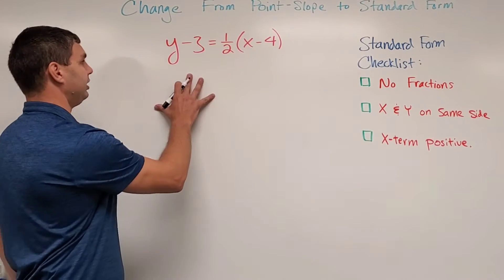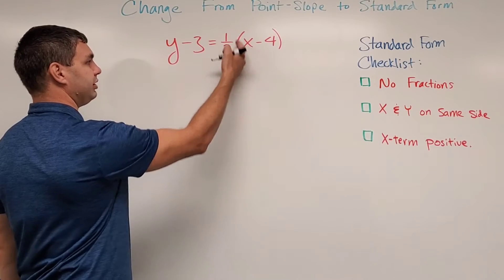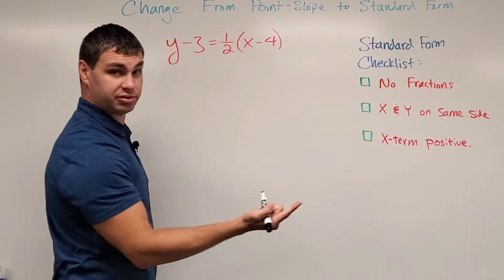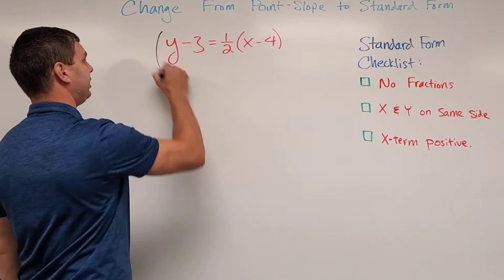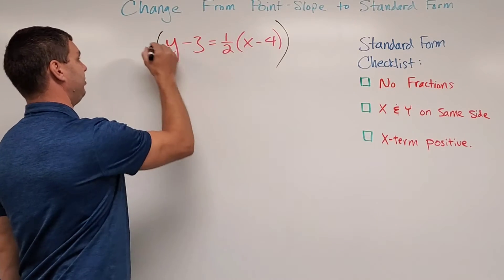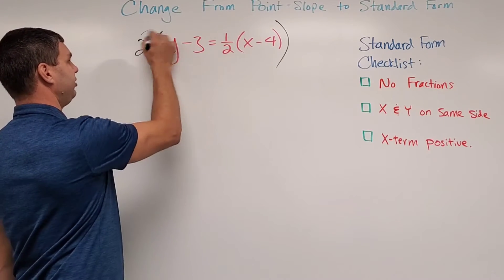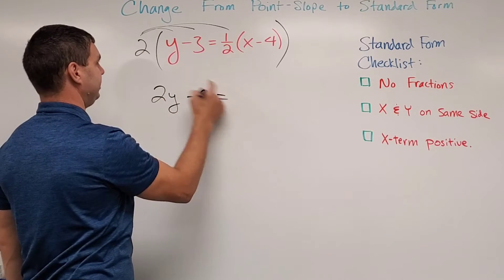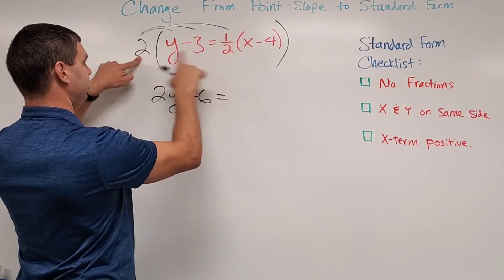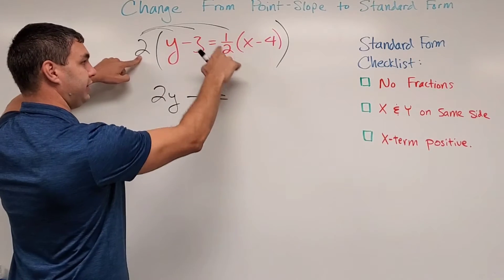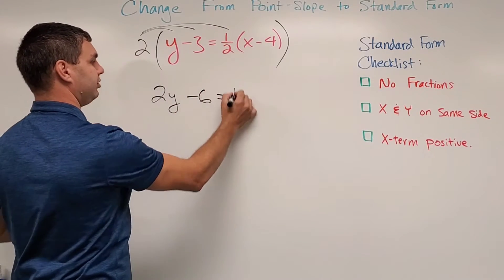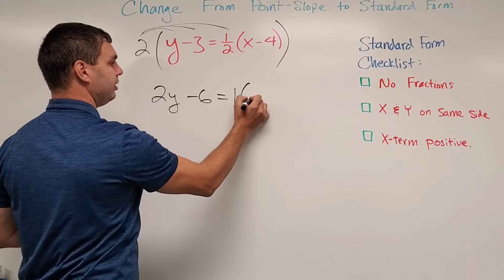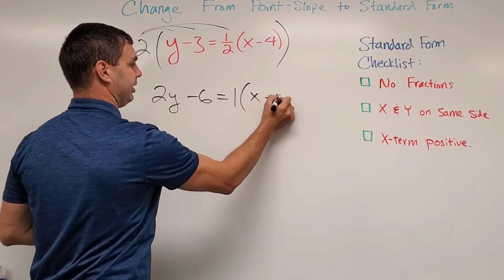Let's try it. In this one I'm probably first going to get rid of my fraction. That's my first step in my checklist by multiplying by the denominator. Multiplying by 2 here, when I do that, let's see what I get. I get 2y minus 6 equals, and then the reason I chose 2 is because the 2 for multiplying and dividing by 2 is going to cancel, leave me with just the numerator of 1 times x minus 4.